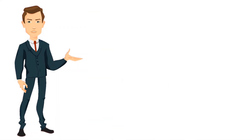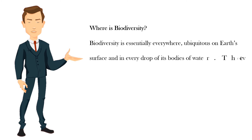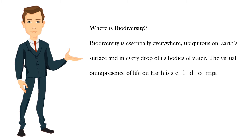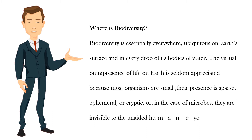Where is biodiversity? Biodiversity is essentially everywhere, ubiquitous on Earth's surface and in every drop of its bodies of water. The virtual omnipresence of life on Earth is seldom appreciated because most organisms are small, their presence is sparse, ephemeral, or cryptic, or, in the case of microbes, they are invisible to the unaided human eye.